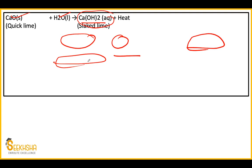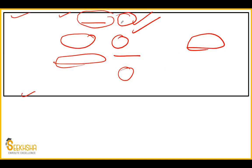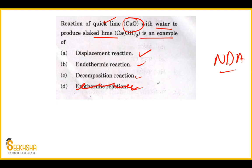It is not necessarily only one type of reaction when two compounds react. Looking at the equation again: one product is calcium hydroxide and the other output is heat — a large amount of heat. Because of this, the slaked lime becomes warm. A reaction in which a lot of heat is produced during product formation is called an exothermic chemical reaction. So the reaction of quick lime with H2O gives calcium hydroxide — this is both a combination reaction and an exothermic chemical reaction.